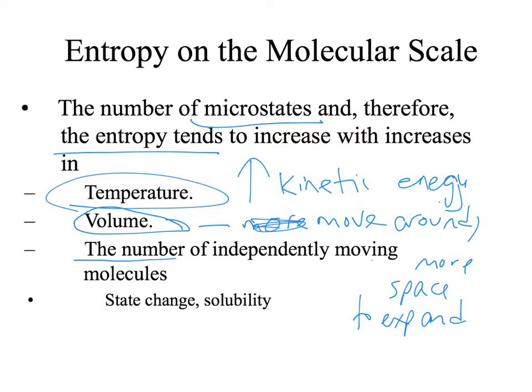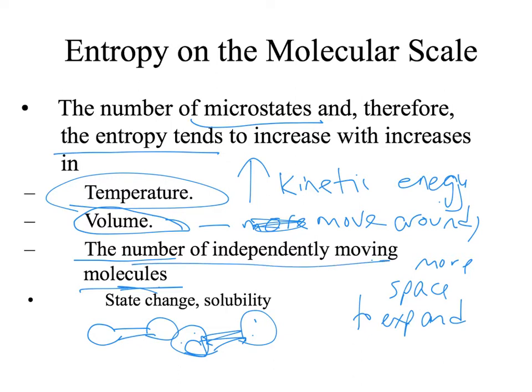The number of independently moving molecules can also affect the places they can be. If you have 16 molecules, think of that probability diagram — there would be more ways to distribute those than if you had four. So the number of molecules will affect how much entropy you have. More molecules, more moles means greater thermal disorder, greater entropy.